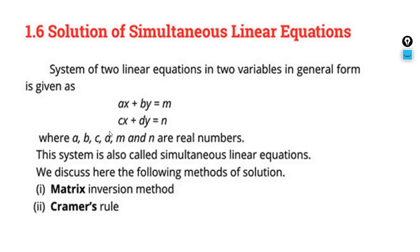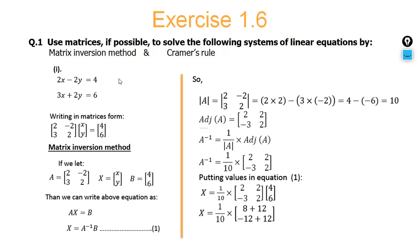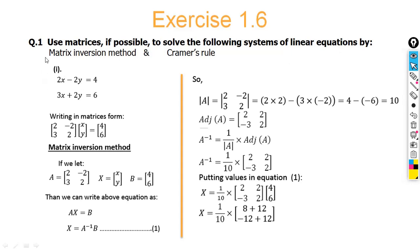Since there are 13 questions total — 8 parts in question 1 and 5 others — solving with both matrix inversion and Cramer's rule gives us 26 questions. In the board exam, questions come from either method, so you may be asked to solve using Cramer's rule or matrix inversion method. Both methods are easy, not difficult. Let's move ahead.